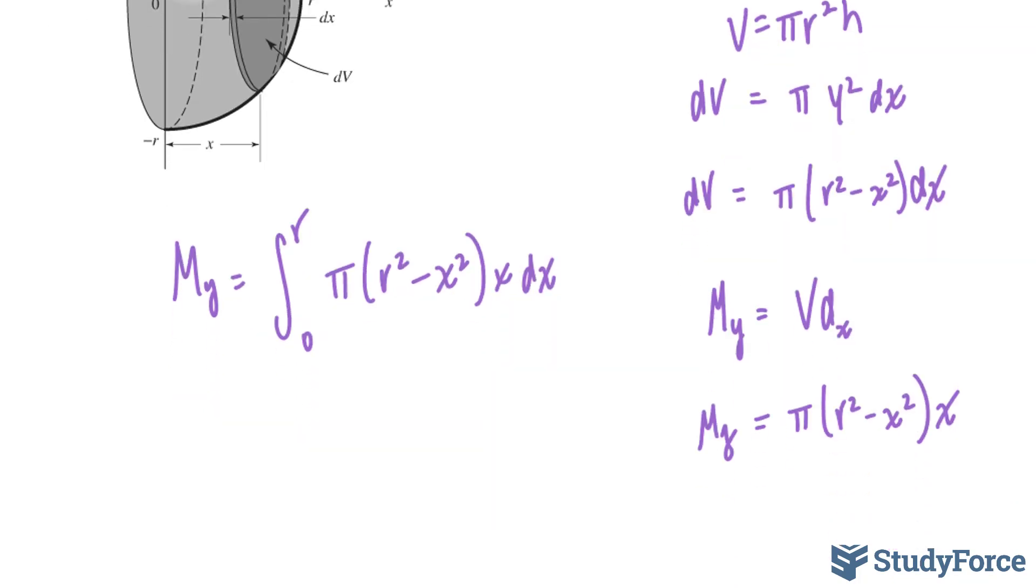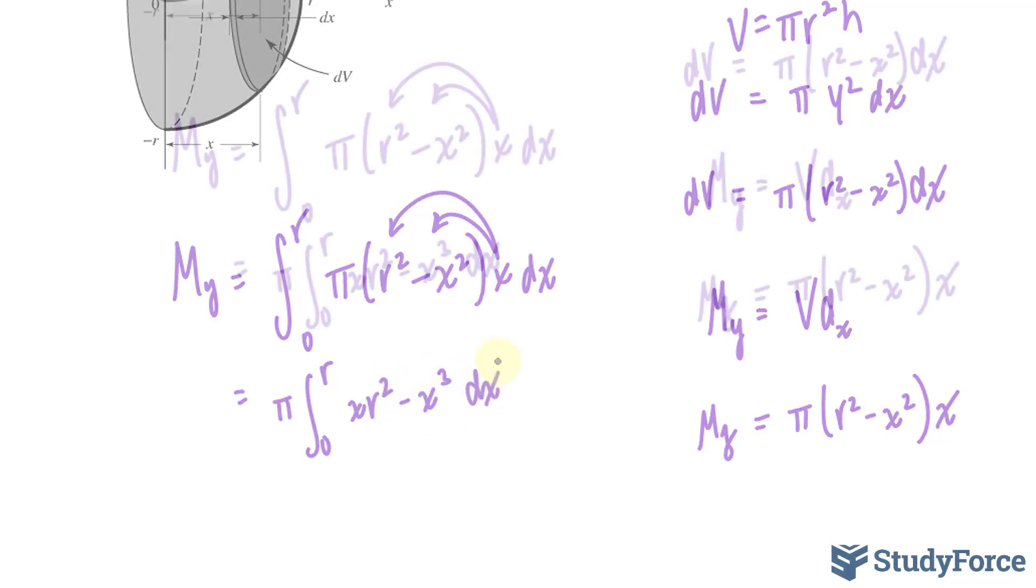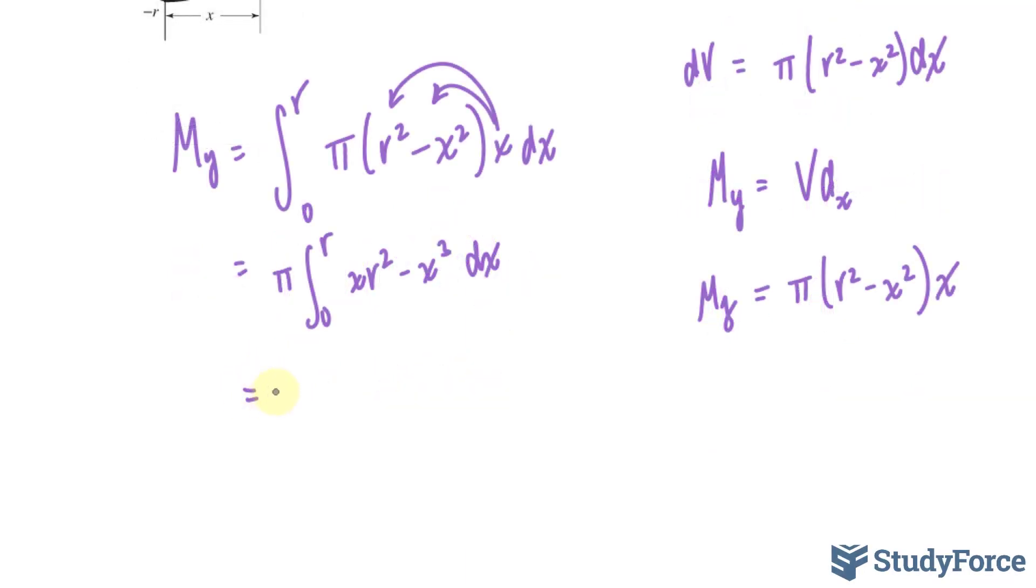Integrating this isn't too hard. First I'll pull out the pi. Now this part, we'll multiply this x into here. This gives us x r to the power of 2 minus x to the power of 3 dx. We integrate now with respect to x. This becomes r squared x squared over 2. While this term becomes minus x to the power of 4 over 4.